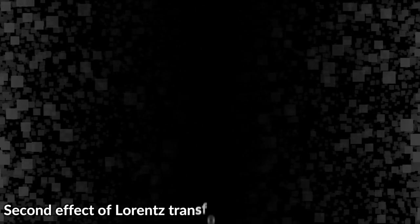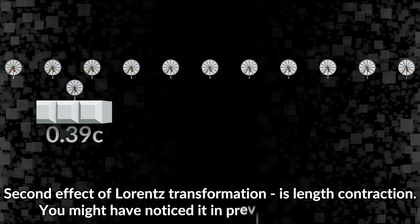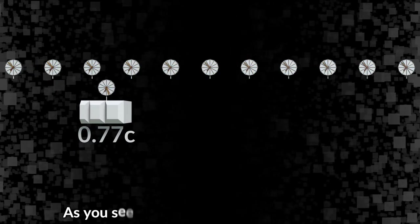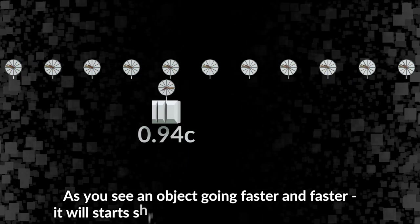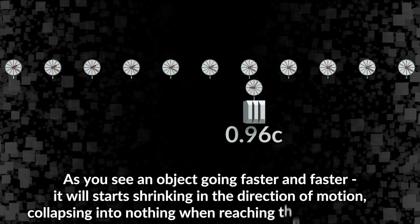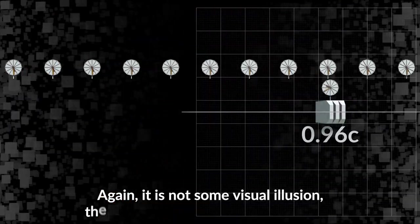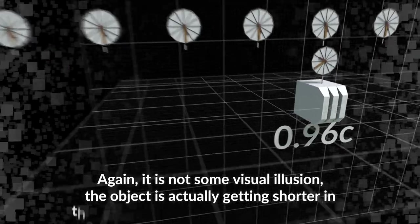Second effect of Lorentz transformation is length contraction. You might have noticed it in previous demonstration. As you see an object going faster and faster, it will start shrinking in the direction of motion, collapsing into nothing when reaching the speed of light. Again, it is not some visual illusion - the object is actually getting shorter in the frame of reference of a static observer.